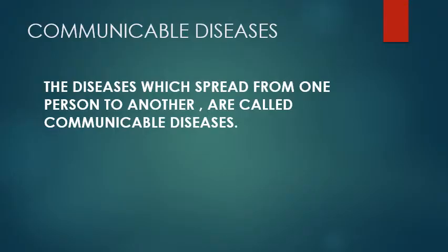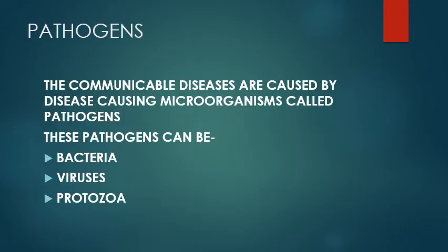The first category of diseases we are going to study is communicable diseases. As the name indicates, the diseases which spread from one person to another are called communicable diseases. These diseases are caused by certain disease causing agents or microorganisms, which are called pathogens or germs.